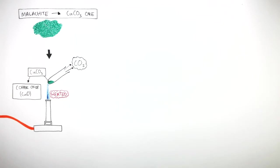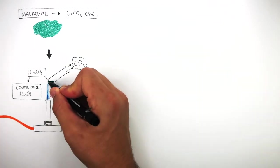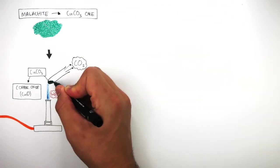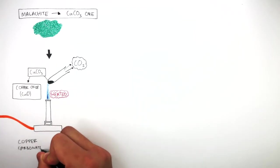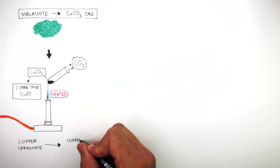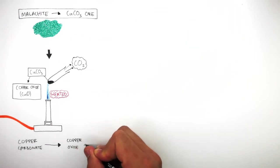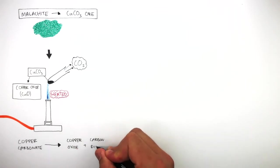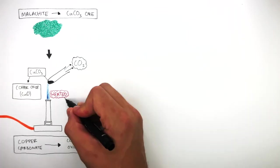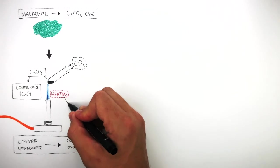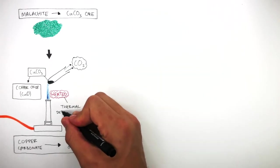The green copper carbonate changes to a black copper oxide. The word equation for this chemical reaction is: copper carbonate reacts to form copper oxide and carbon dioxide. Because heat is used to break down the copper carbonate, this is an example of thermal decomposition.